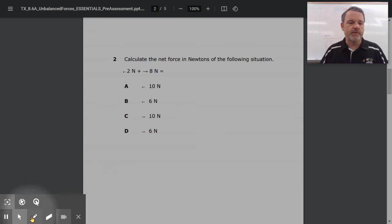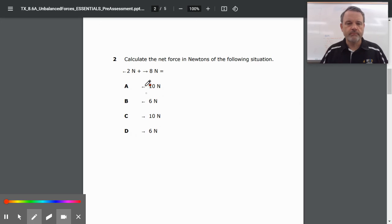On this particular problem, you see that the forces are going in opposite directions. This one is going to the left, this one is going to the right. So you're going to subtract them. You have 8 minus 2. 8 minus 2 is 6.